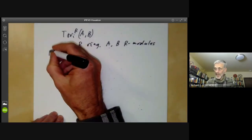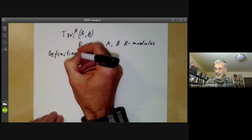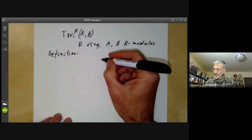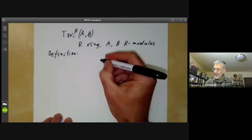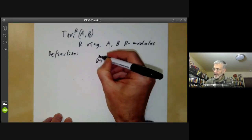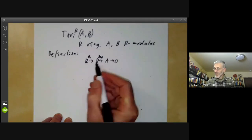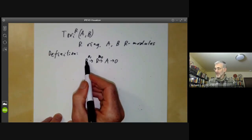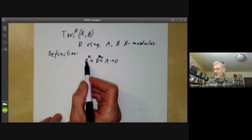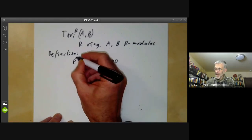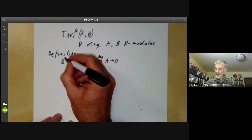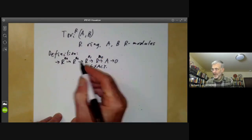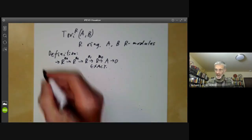So first we give the definition, and this is similar to the definition for the integers, only more so. For the integers, we took a resolution of A by R^n0 and R^n1. Over the integers, if we take a free module, then any sub-module of a free module is also free, so we can stop the resolution there. For more general rings, we have to keep going if we want the sequence to be exact. So we have a possibly infinite sequence where the image of each map is the kernel of the next map.